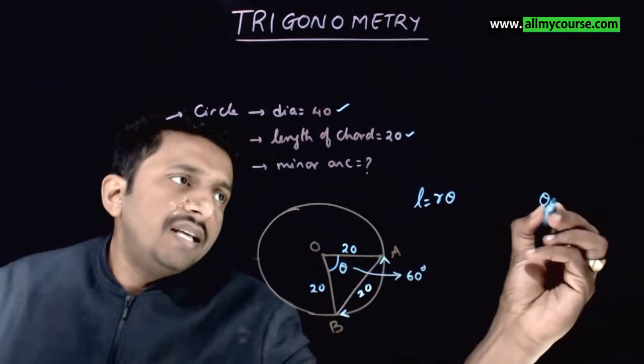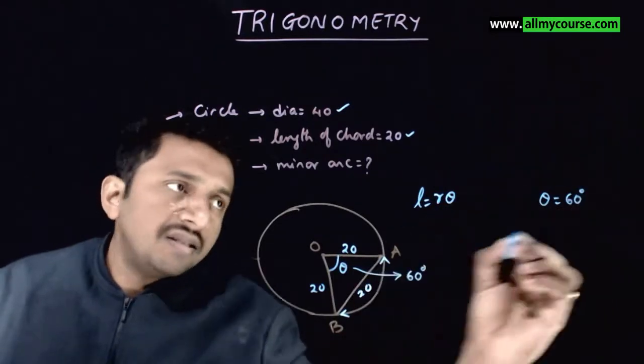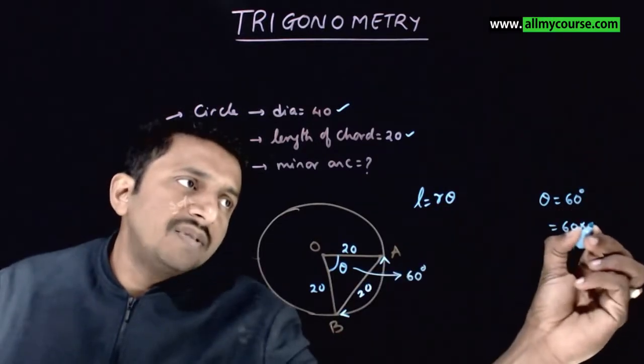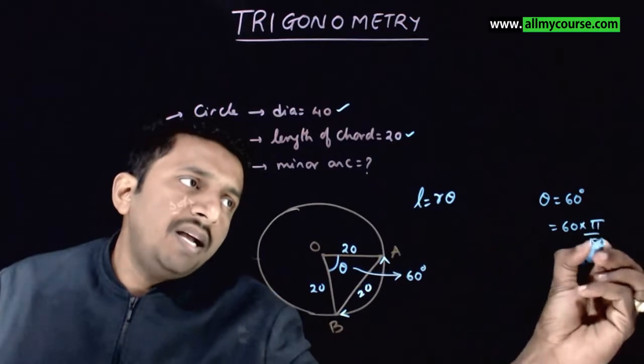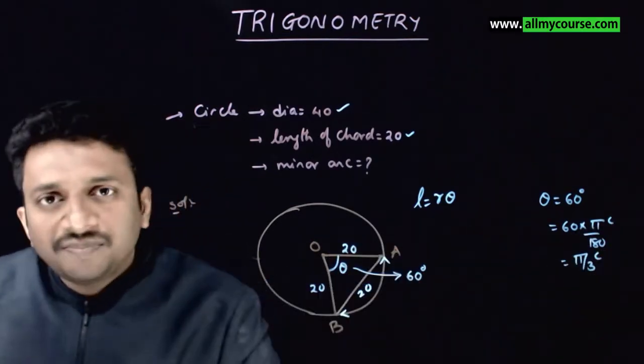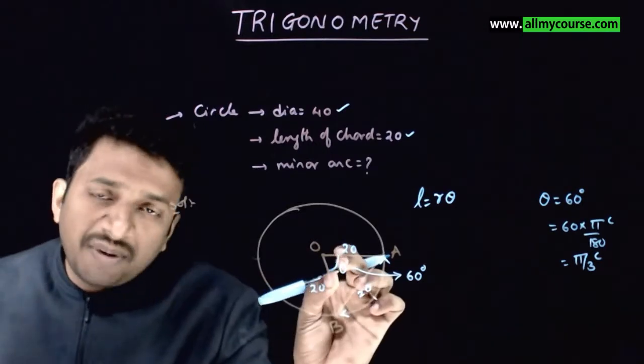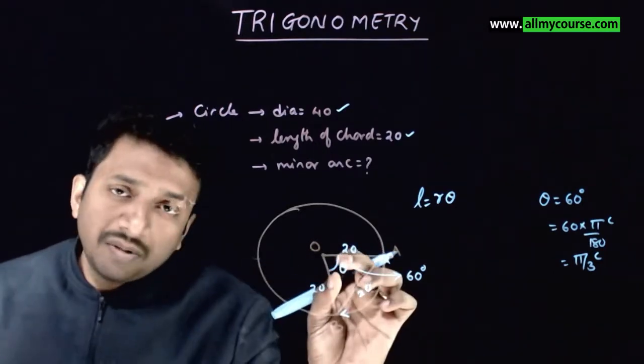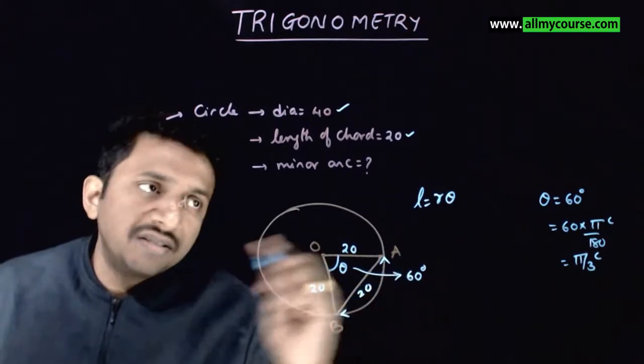So, this theta is equal to 60 degrees, that is equal to 60 times pi by 180 radians or pi by 3 radians. This angle is pi by 3 radians, you would have remembered the special angle also, 60 degrees corresponds to pi by 3 radians.